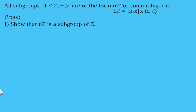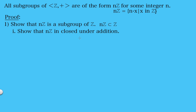Since we're saying that these are the only subgroups of the integers, let's first show that this is in fact a subgroup of the integers. In order to do that, remember we need this to be a subset, we also need it to be closed under addition, and we need this along with addition to be a group. Now clearly this set is a subset of the integers since we assumed that n was in fact an integer, so the next thing we need to show is that the set of integer multiples of n is closed under addition.